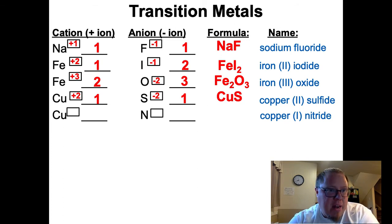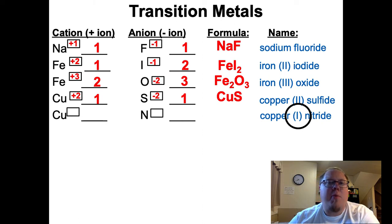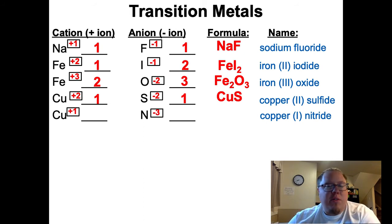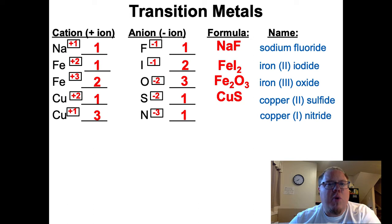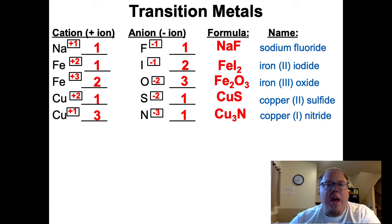Here's another one. This time it is not copper 2, it's copper 1 - just a single I. Copper 1 nitride. So this has a positive 1 charge on the copper. Nitrogen is in the nitrogen family, giving a negative 3 charge. So this would be a 3 to 1 ratio - 3 coppers with a plus 1 each to cancel out the 1 nitrogen with negative 3. So it would be Cu3N. Again, in copper 1 nitride, we have 3 of the coppers. The 1 does not refer to how many coppers we have.